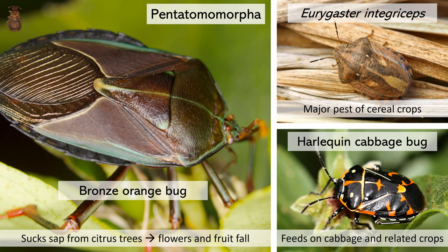Just as a few examples: we have the bronze orange bug, which sucks sap from citrus trees causing the flowers and fruit to fall; Aelia integriceps, which is a major pest of cereal crops; and the harlequin cabbage bug, which feeds on cabbage and related crops.